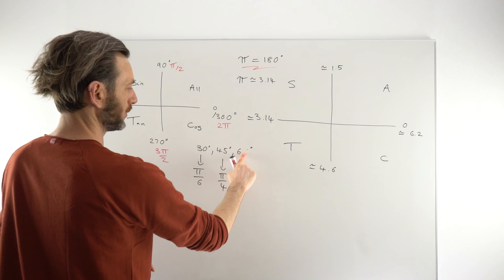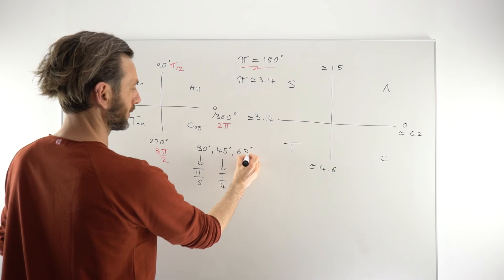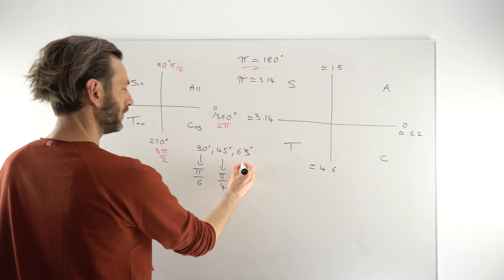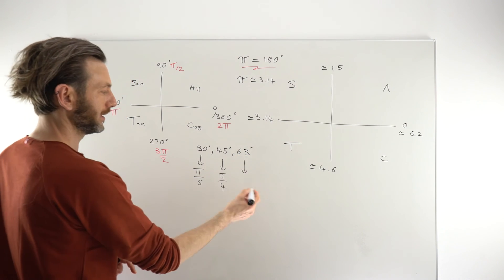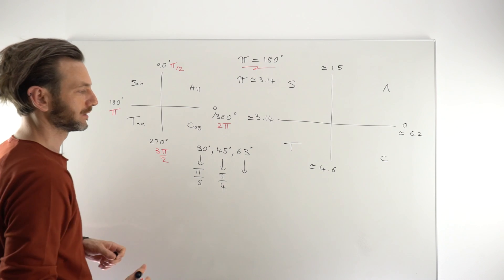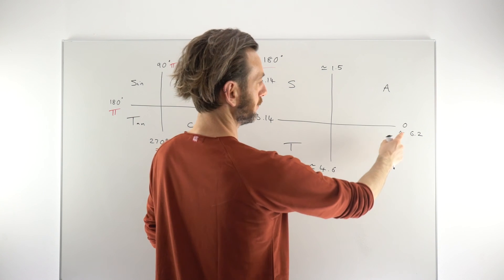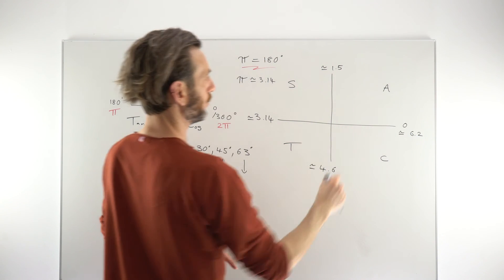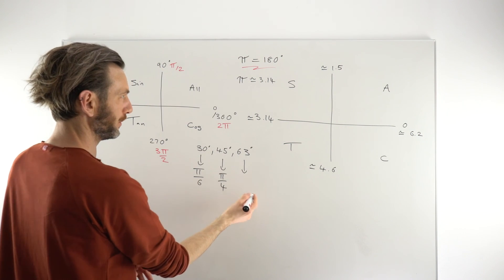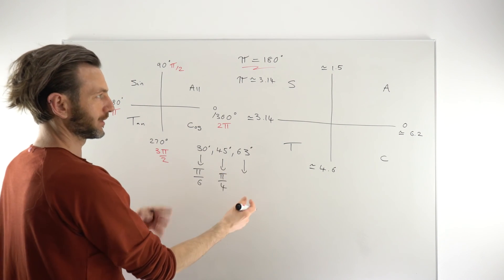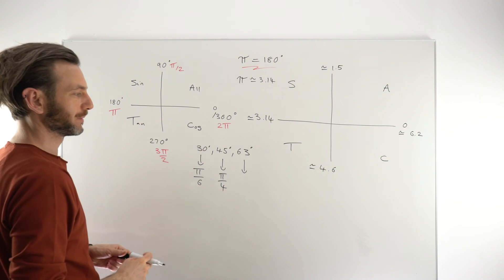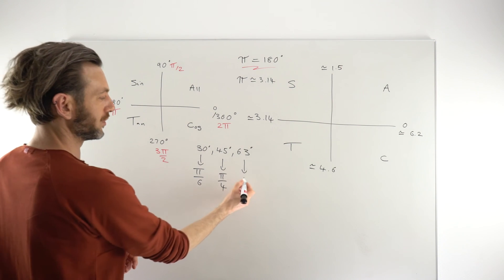But if you suddenly change these from the friendly numbers to, say, 63 degrees, well, that's not going to be π by something. That's going to be a decimal version of radians. 63 degrees is up in here, somewhere in the first quadrant. So you know that as a decimal, it's going to be between 0 and 1.5. So this is probably going to be some number between those values, basically, in its radian form.